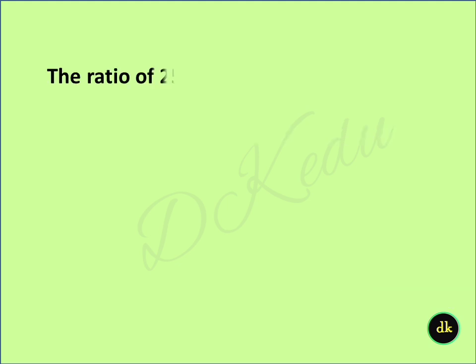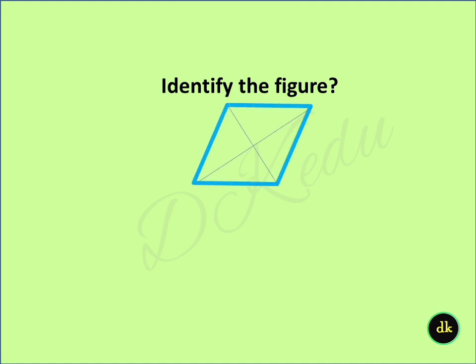The ratio of 25 paisa to 1 rupee is? Answer: 1 is to 4. Identify the figure. Answer: A rhombus.